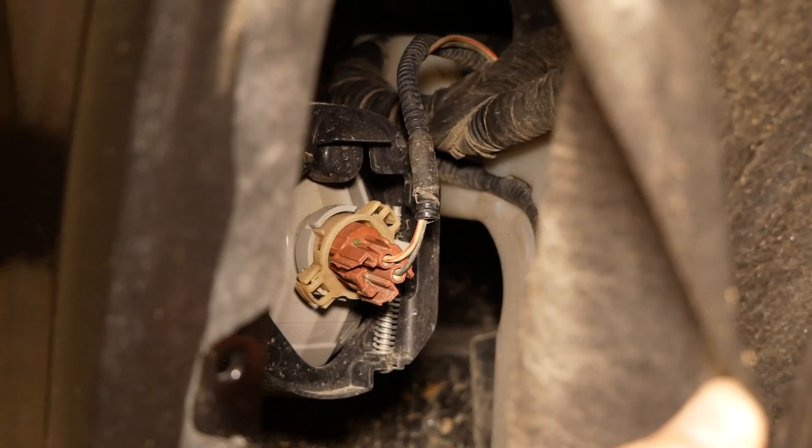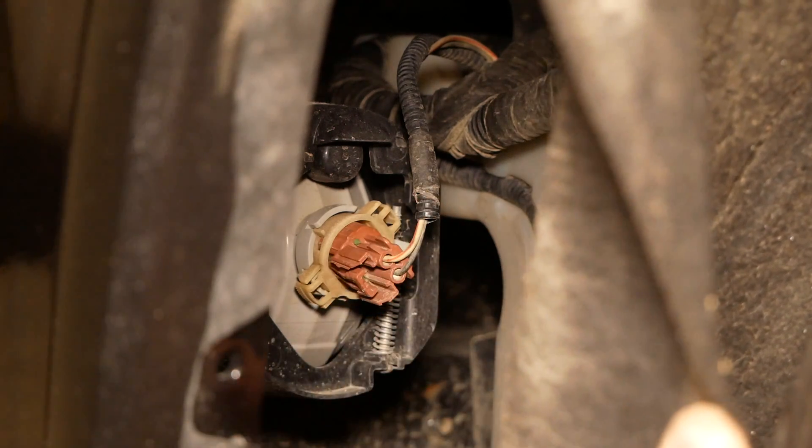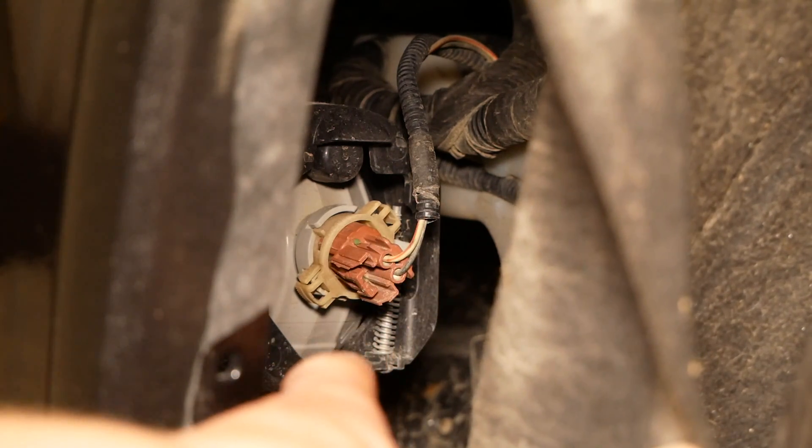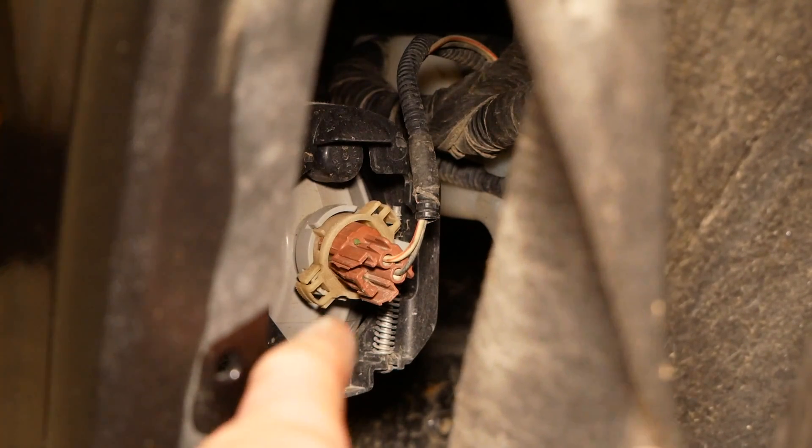Pulling back the fender liner you can see the fog light is located right here under the front bumper. We're going to have to disconnect this wire and then to remove the bulb it's just two pressure tabs on either side.